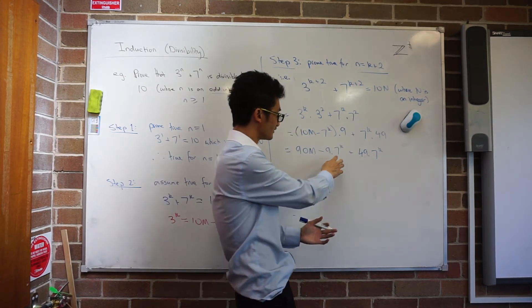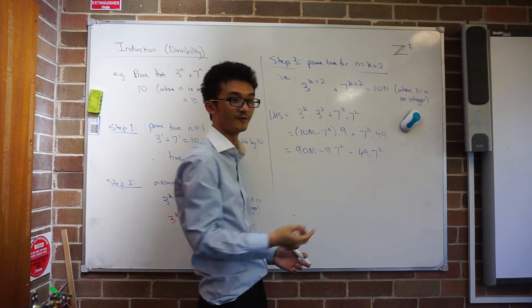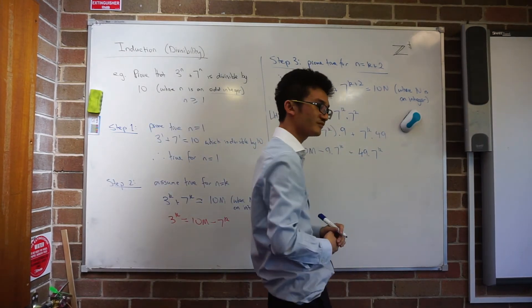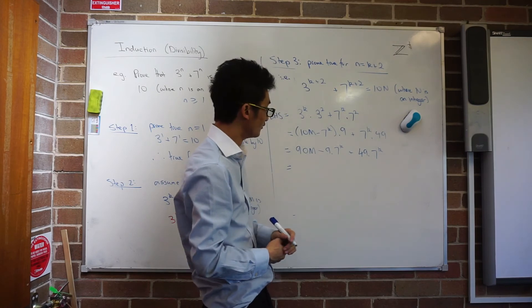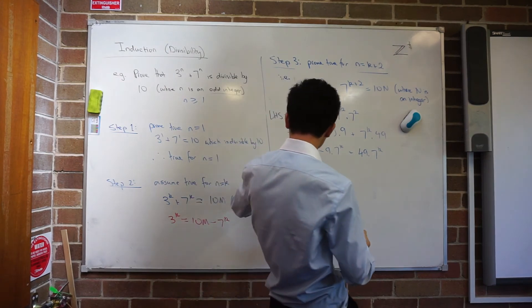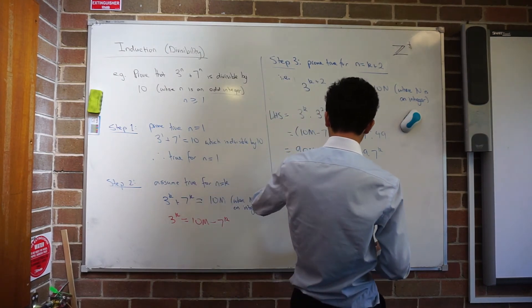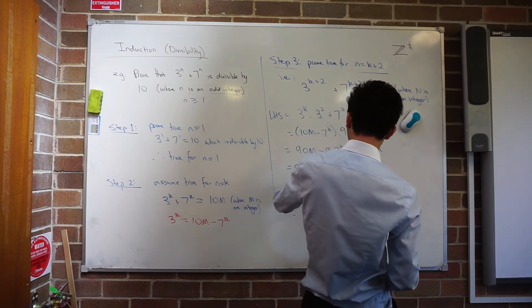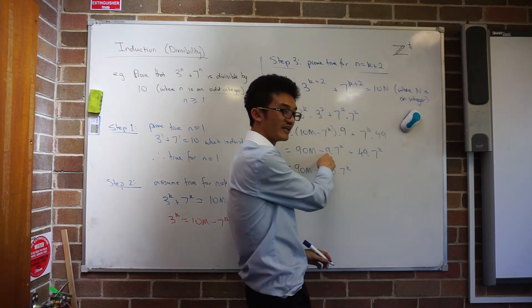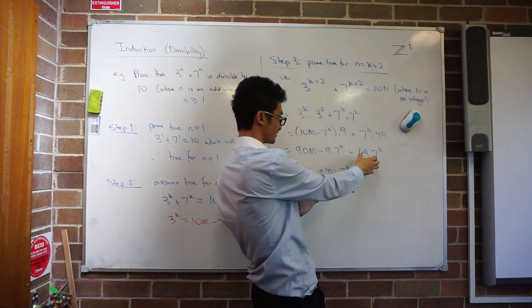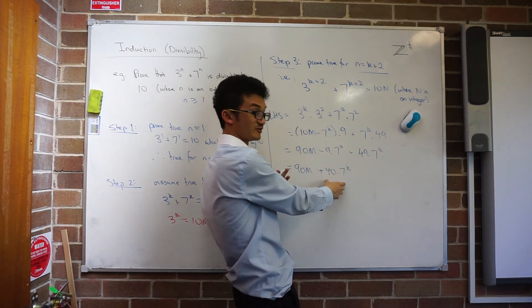Because these kind of have the same variable almost. So it would be what, 58 times 7 to the power k? Well, I've got negative 9 and I've got positive 49. Oh, 40 times 7 to the power k. Good, right. So I've got 90m plus 40 times 7 to the power k. Because you've got negative 9 lots of something, positive 49 lots of something. You put them together. That's just 49 minus 9. That gives me 40.